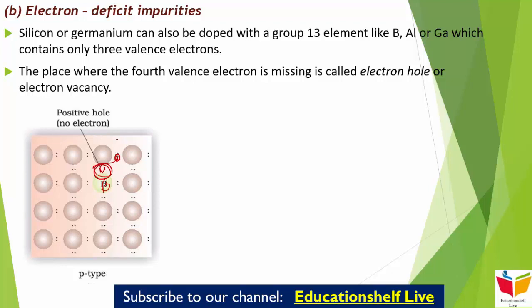Now under the influence of electric field, electrons would move towards the positively charged plate through electronic holes, but it would appear as if electron holes are positively charged and are moving towards the negatively charged plate। तो electric field के influence में electrons positively charged plate की तरफ जाएंगे, लेकिन ऐसा लगेगा कि electron holes positively charged हैं और negatively charged plate की तरफ जा रहे हैं। इस type के semiconductor को हम बोलते हैं P-type semiconductor। तो हमारे दो types हो गए: N-type और P-type।